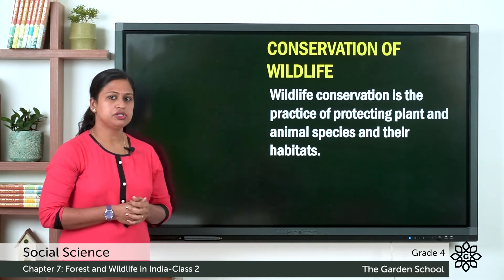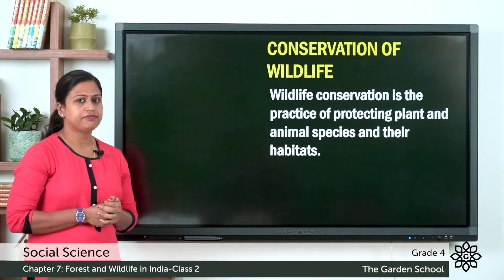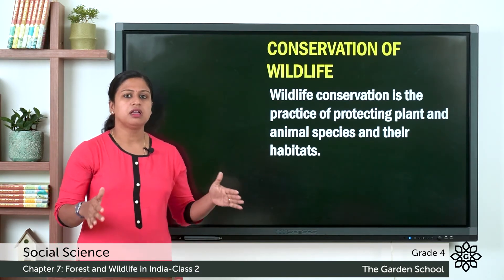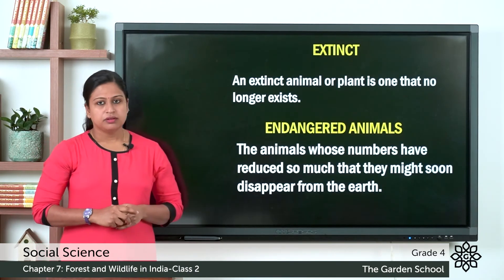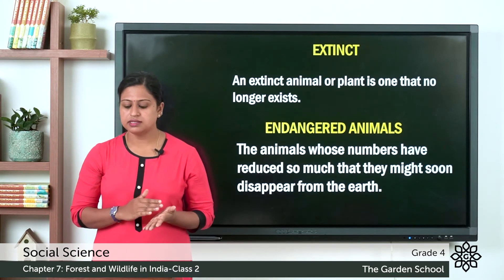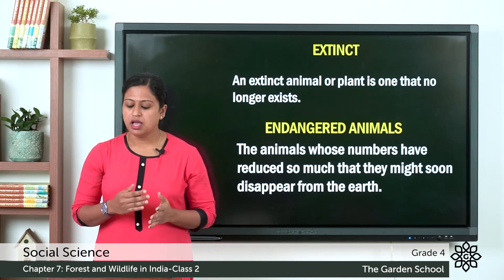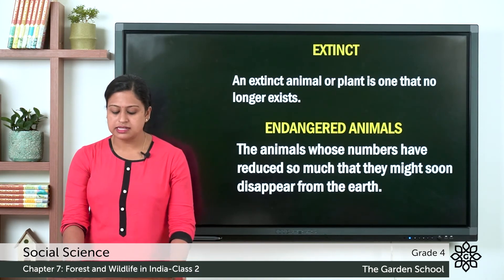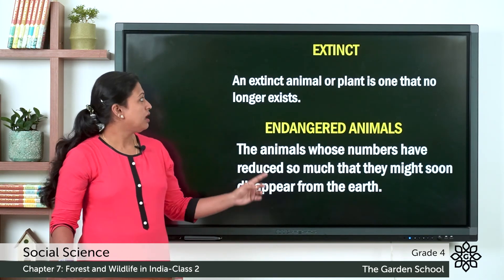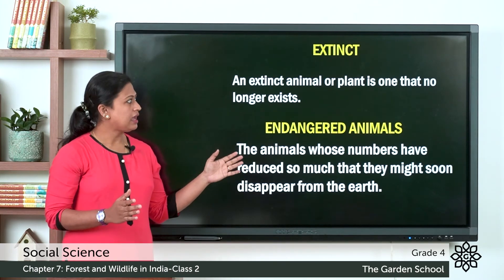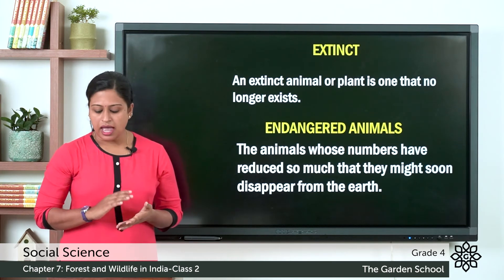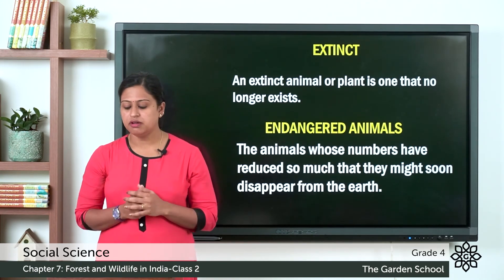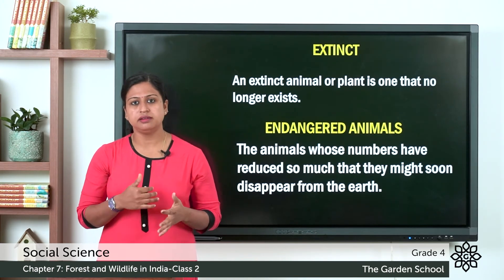Now we will discuss about the conservation of wildlife. Conservation of wildlife is a practice of protecting plant and animal species and their habitat. Habitat means the place where they live. Cutting down of trees results in the destroying of natural habitat of animals. And human beings hunt and kill these animals for skin, fur, thorn and tusks. As a result many animals have become extinct. Extinct means an animal or plant that is no longer in existence. Due to this, some animals whose numbers have been reduced might soon disappear from the earth, and these species are known as endangered species.